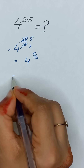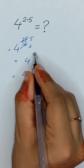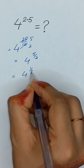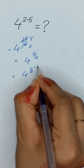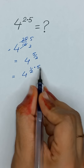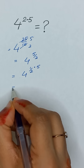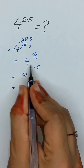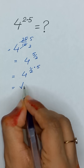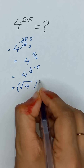We can write 4 to the power 5/2 as 4 to the power (1/2) times 5. Then 4 to the power 1/2 can be written as the square root of 4, giving us the square root of 4 to the power 5.